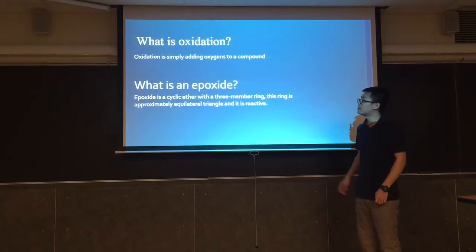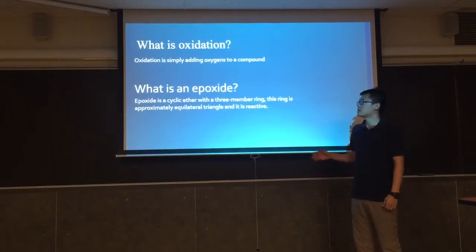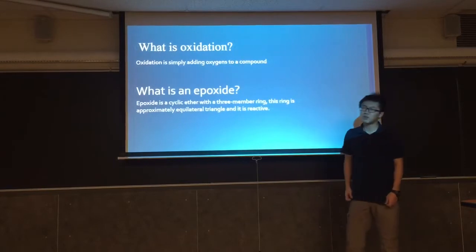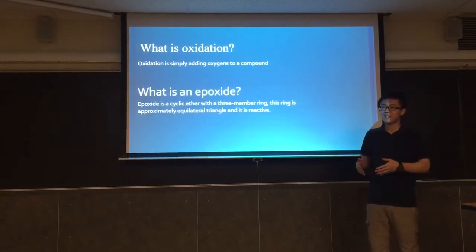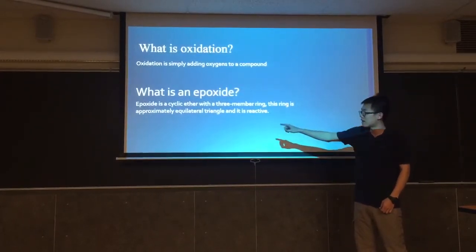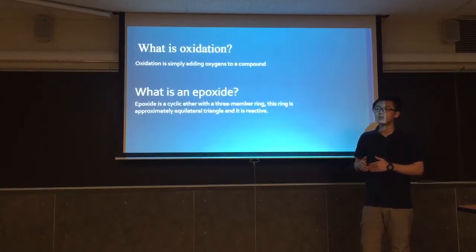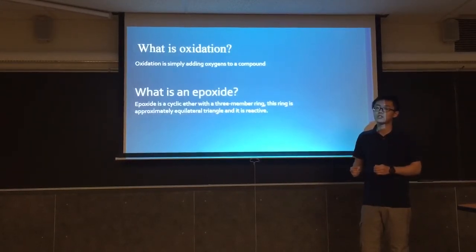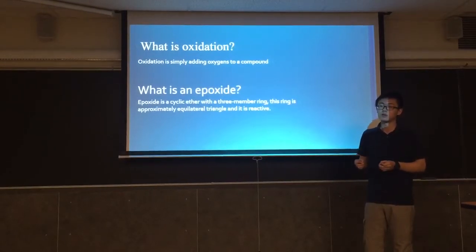Then, what is an epoxide? Epoxide is a cyclic ether with a three-member ring. And this ring is approximately equilateral triangle, and it is reactive. So here's another question. Why is it reactive? Because we know triangular structure is relatively stable, like from elementary math. But actually, in organic chemistry, a triangular structure, and especially that's an equilateral triangular structure, the bond angle is 60 degrees, which is way smaller than an ideal bond angle, 109 degrees. So it has a ring strain, which can make it easier to be broken through a chemical process.